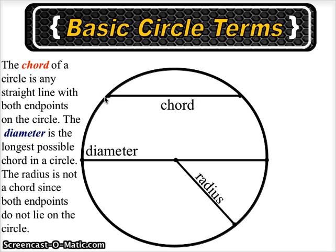The chord of a circle is any straight line with endpoints that lie on the circle. The diameter is a special case of a chord. The diameter has endpoints on either end of the circle and passes through the center.